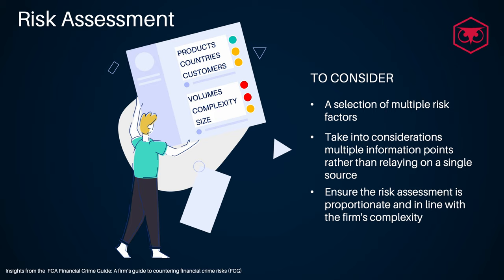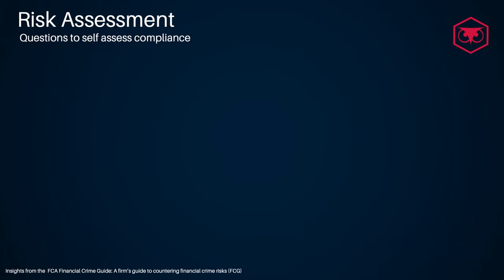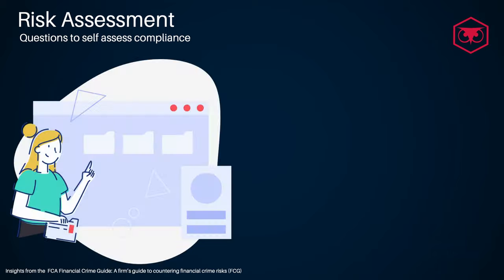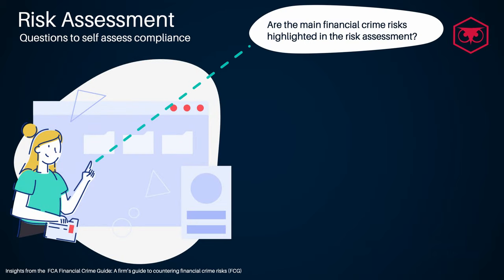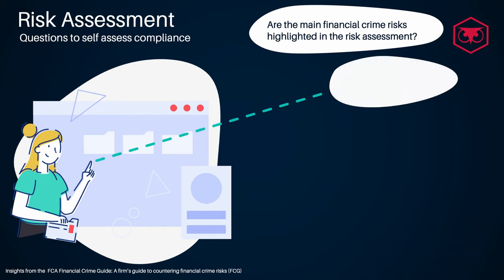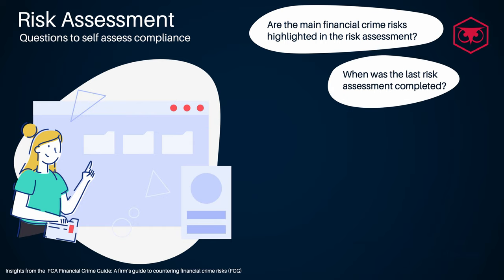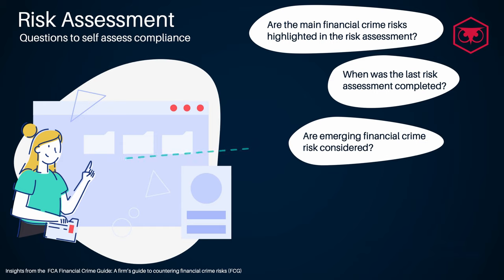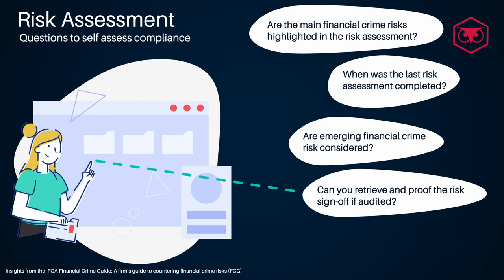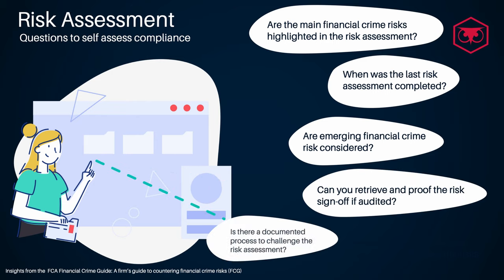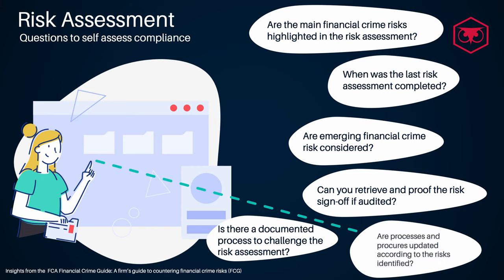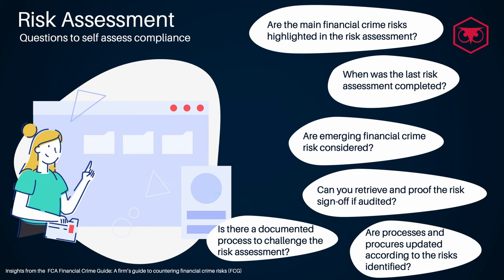For an accurate evaluation of financial crime risks escalated to their clients, some questions to self-assess your compliance with risk assessment regulatory requirements could be: Are the main financial crime risks highlighted in the risk assessment? When was the last risk assessment completed? Are emerging financial crime risks considered? Can you retrieve proof of the risk sign-off if your firm is going to be audited? Is there a documented process to challenge the risk assessment? Are processes and procedures updated according to the risks identified?